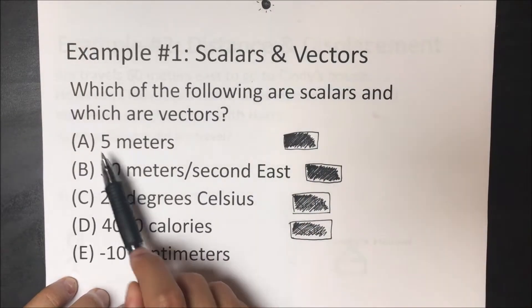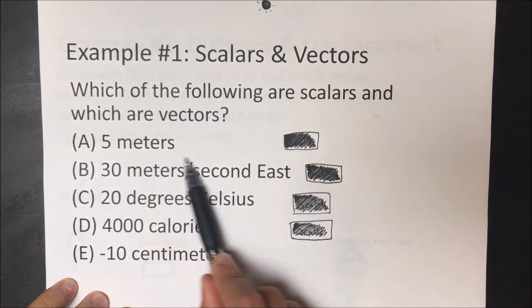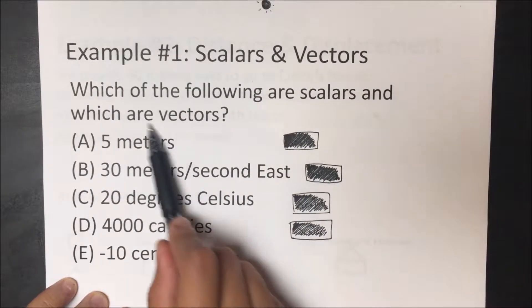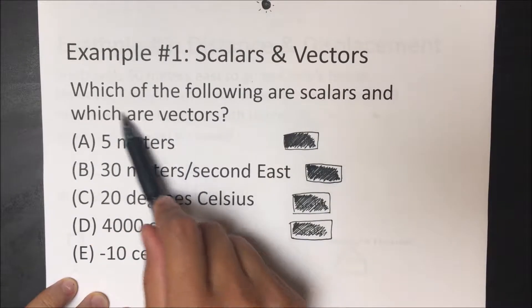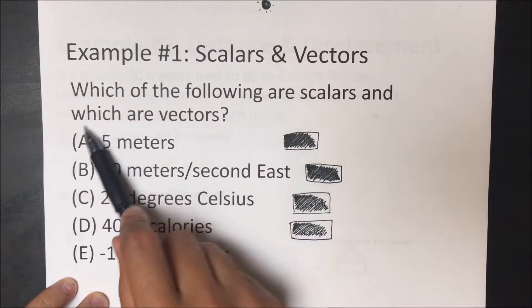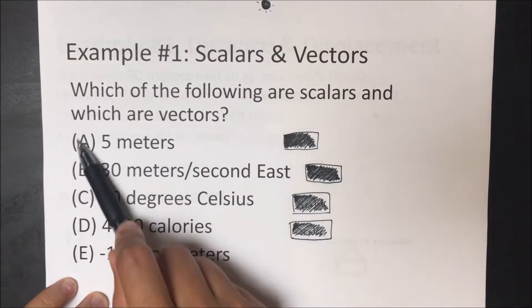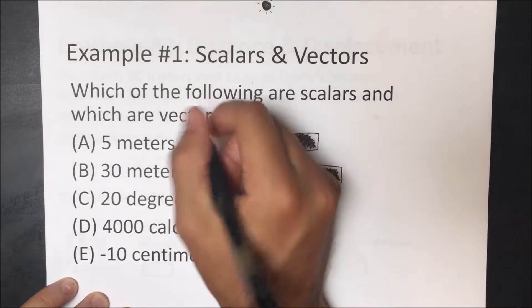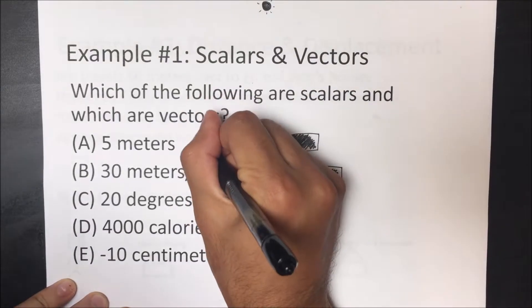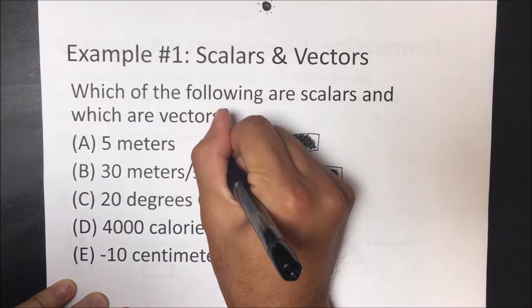So let's look at this first one: 5 meters. We see 5 meters — there's no direction involved here, it only shows a quantity, 5 meters. So we know this one is going to be a scalar.